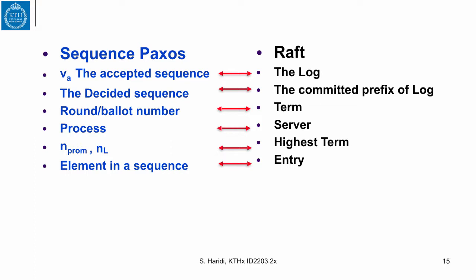In sequence Paxos, when we talk about the accepted sequence, Raft will talk about the log. When we talk about the decided sequence, Raft talks about the committed prefix of the log. In sequence Paxos, when we talk about a round or ballot number — specifically ballot arrays with rounds — they use the word term, so they have different terms instead of different rounds. When we talk about a process, they talk about the server. When we talk about the promise — the round number, the highest round number that is promised or the round number of the leader — they are talking about the highest term. And when we talk about an element in a sequence, they talk about an entry and its index.